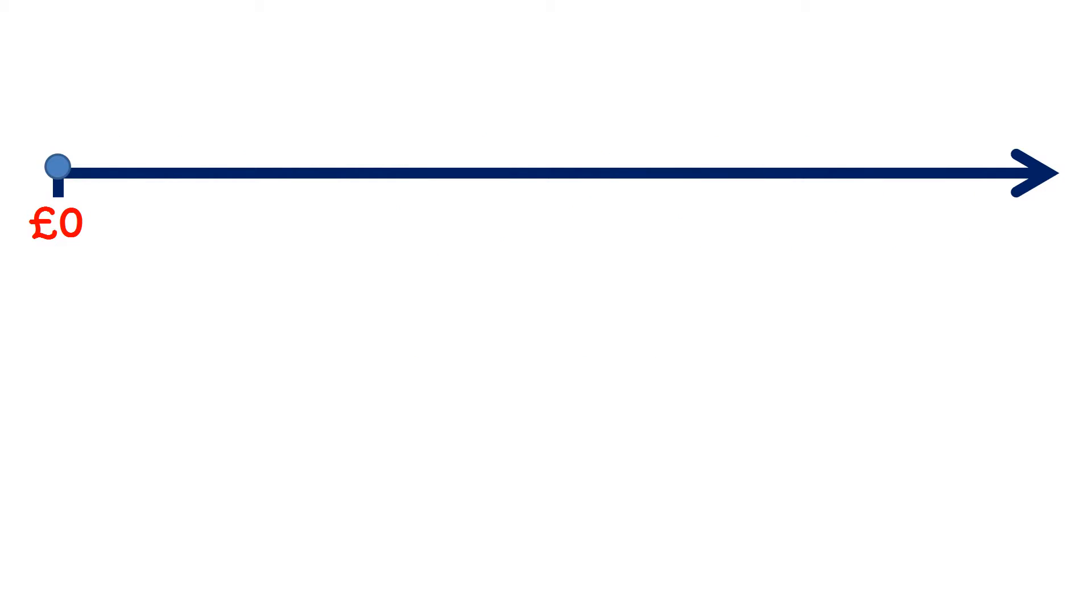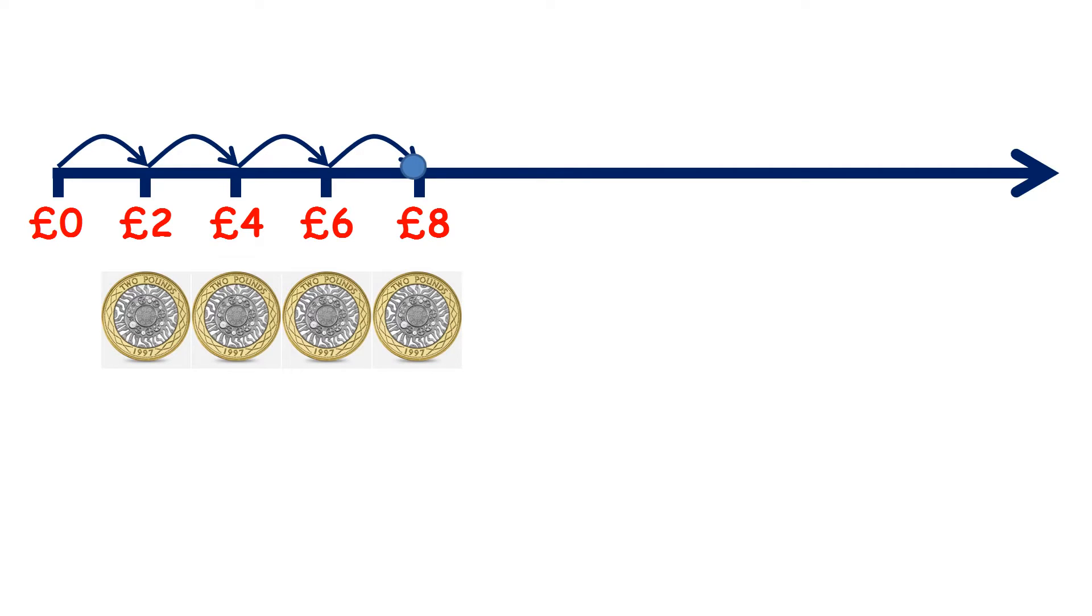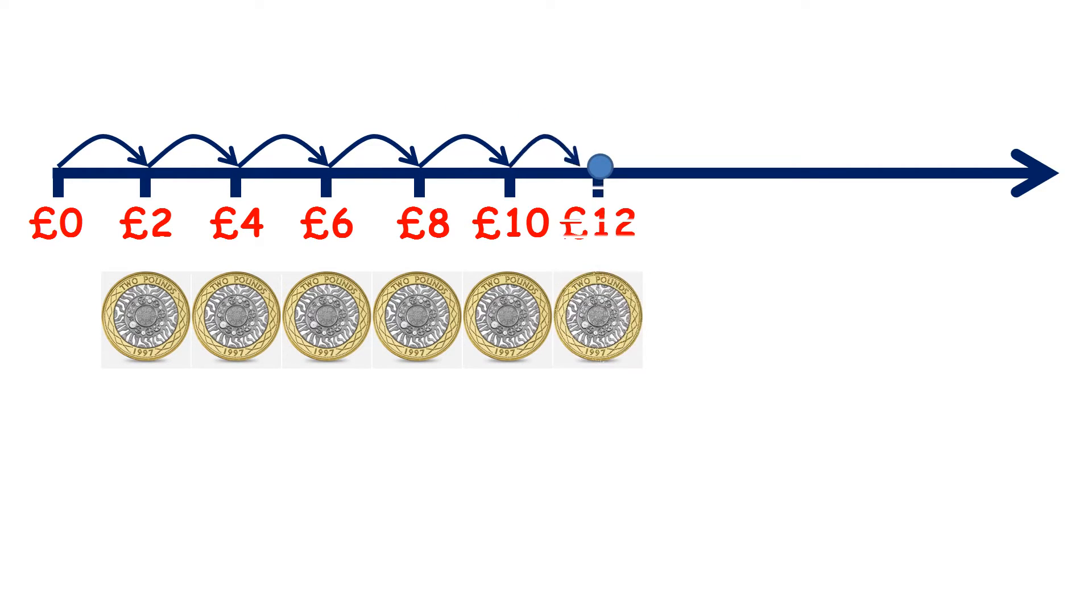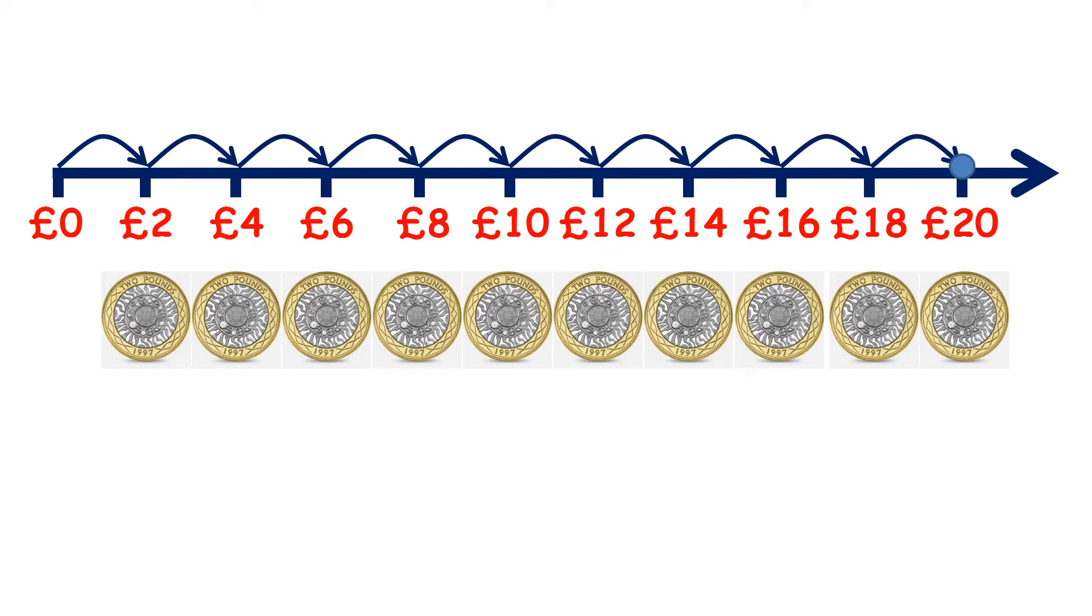Or we can count 2p coins. So let's count 2p, 4p, 6p, 8p, 10p, 12p, 14p, 16p, 18p, and 20p.